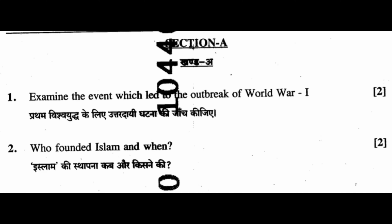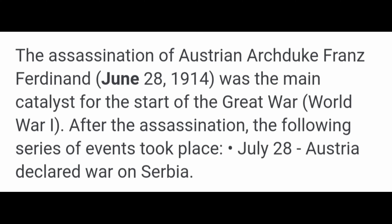Section A, Question 1: Examine the events which led to the outbreak of World War I. The assassination of Austrian Archduke Franz Ferdinand on June 28, 1914 was the main catalyst for the start of the Great War, World War I. After the assassination, the following series of events took place: July 28, Austria declared war on Serbia.